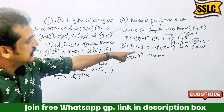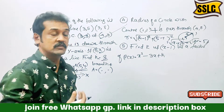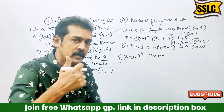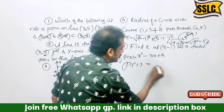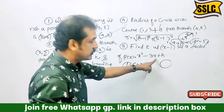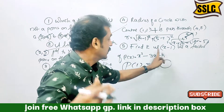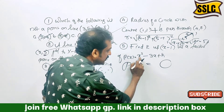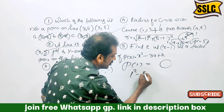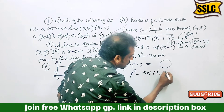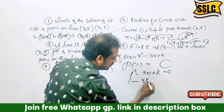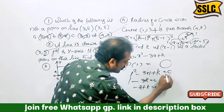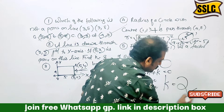Next, find k if x minus 1 is a factor of x² minus 3x plus k. In this polynomial, if x minus 1 is a factor, then x equals 1. Substituting: 1 squared minus 3 plus k equals 0. 1 minus 3 is minus 2 plus k equals 0. Therefore, k equals 2.